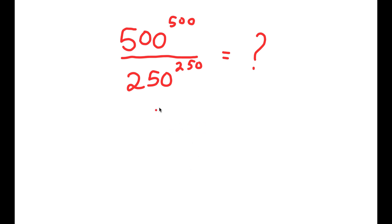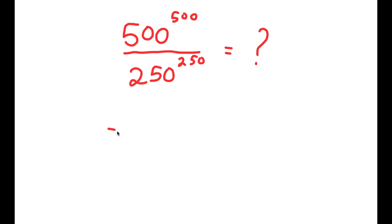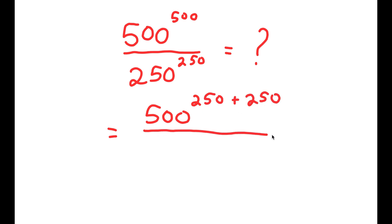In this problem, I have 500 to the power of 500 divided by 250 to the power of 250. To solve this, what I'm first going to do is rewrite this as 500 to the power of 250 plus 250, over 250 to the power of 250.